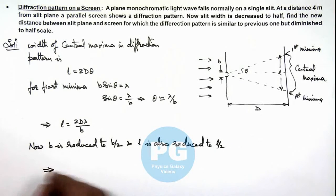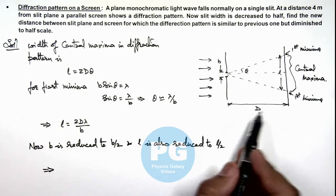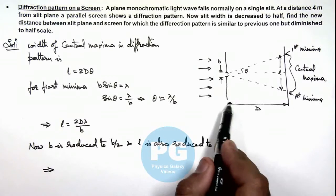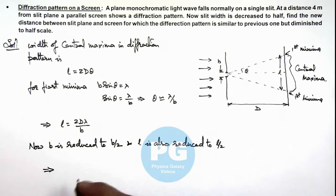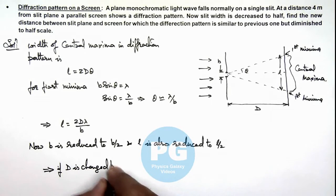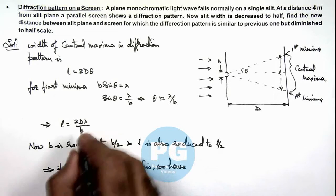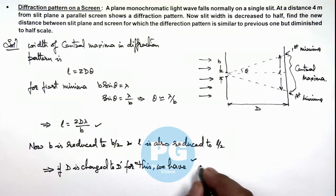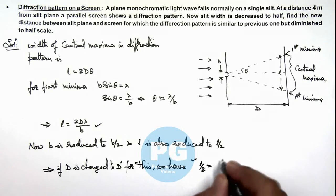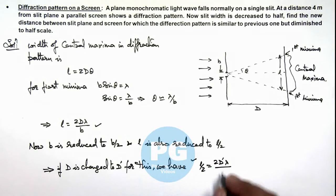This implies if we slightly modify the separation between slit plane and screen, then here we can see if d is changed to d dash. For this, we have the relation we use from here, that is l by 2 is equal to 2 d dash lambda upon b, which should also be changed to b by 2.